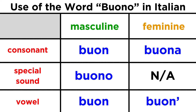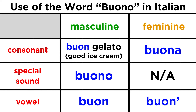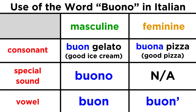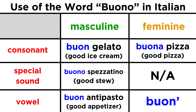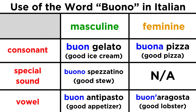So if we fill in the chart the way we did for the indefinite articles, we get: buon gelato and buona pizza, buono spezzatino, and the feminine column is blank. Then we get buon antipasto and buona ragosta.